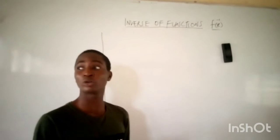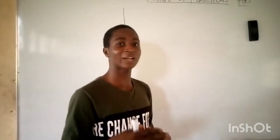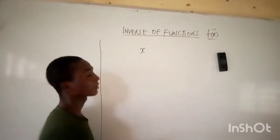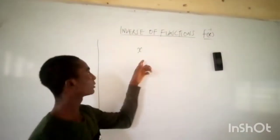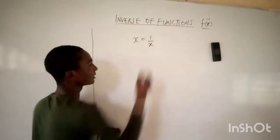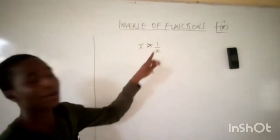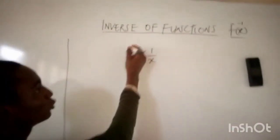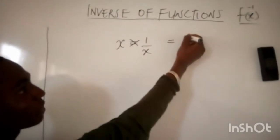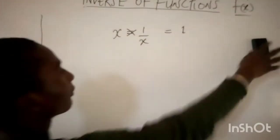The inverse of a function is a function that undoes the action of another function. For instance, if I have x as a function, the inverse of x will be equal to 1 over x. That is to say, if I multiply x by its inverse, it will undo x and my answer will be 1. That is all about the inverse of a function.